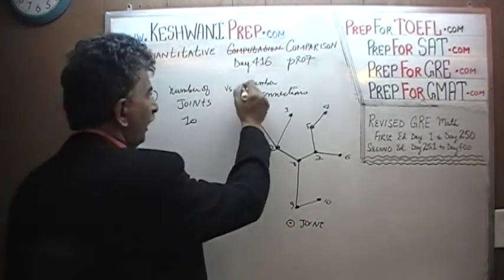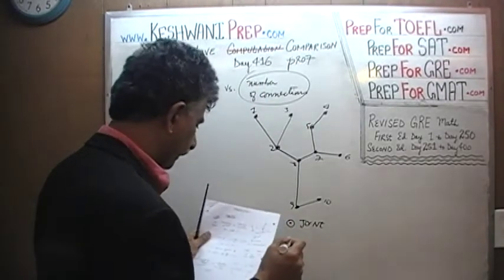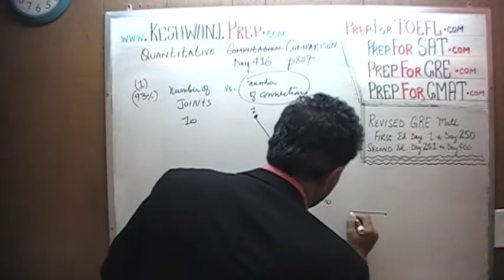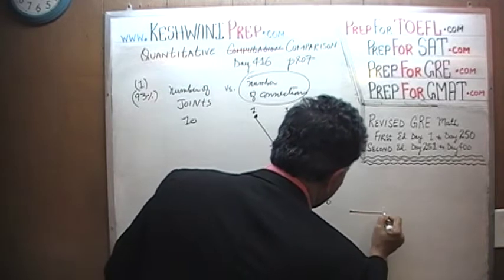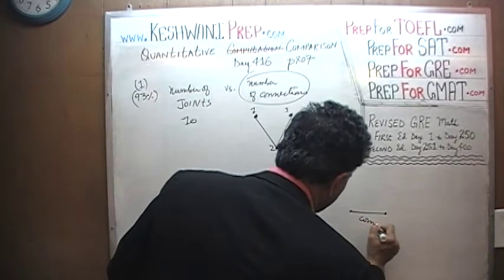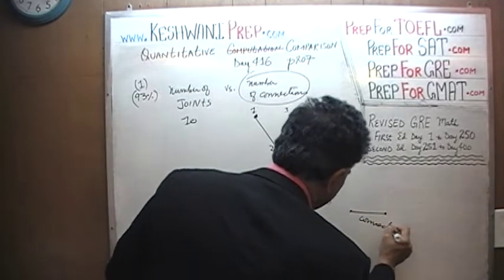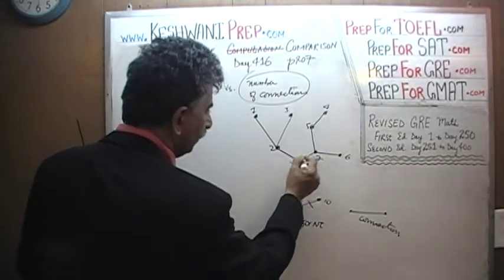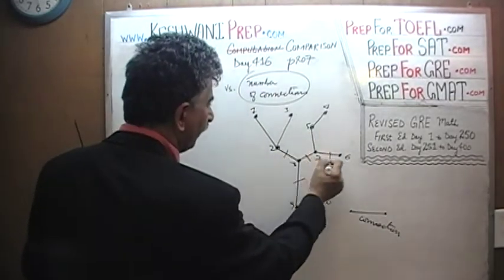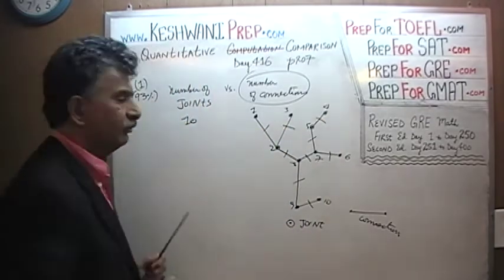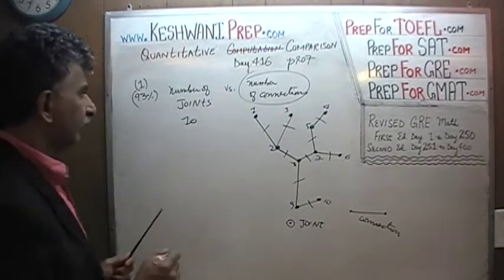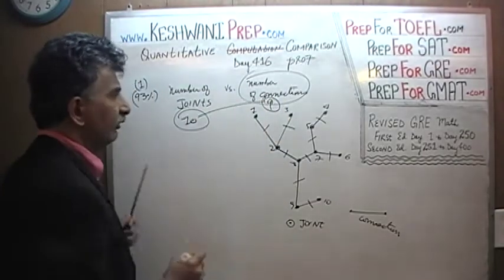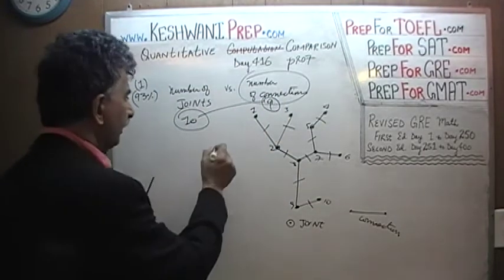Now let's count the number of connections. The connections are the lines between two points. Let's count how many connections there are: 1, 2, 3, 4, 5, 6, 7, 8, and 9. That's all it is — there are 9 connections. So we have 9 connections versus 10 joints: 9 versus 10, the answer is A.